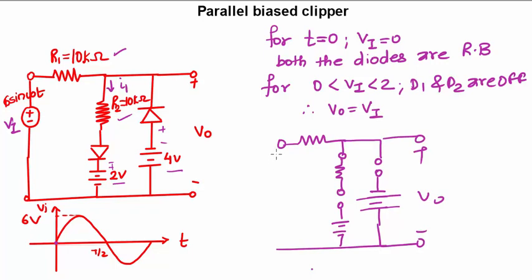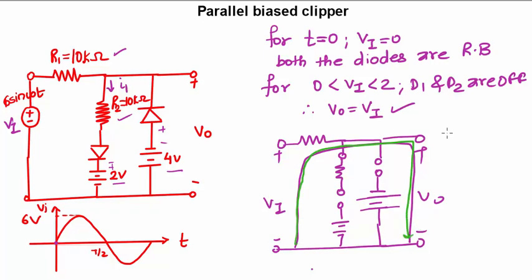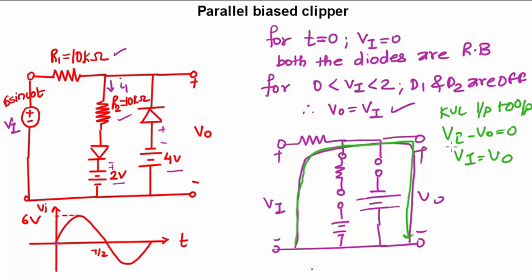Looking at the diagram, when you apply KVL from input to output, you get Vo = Vi. Starting from the input side and moving to the output, we write Vi − Vo = 0, so Vi equals Vo, until and unless you are overcoming 2 volts.